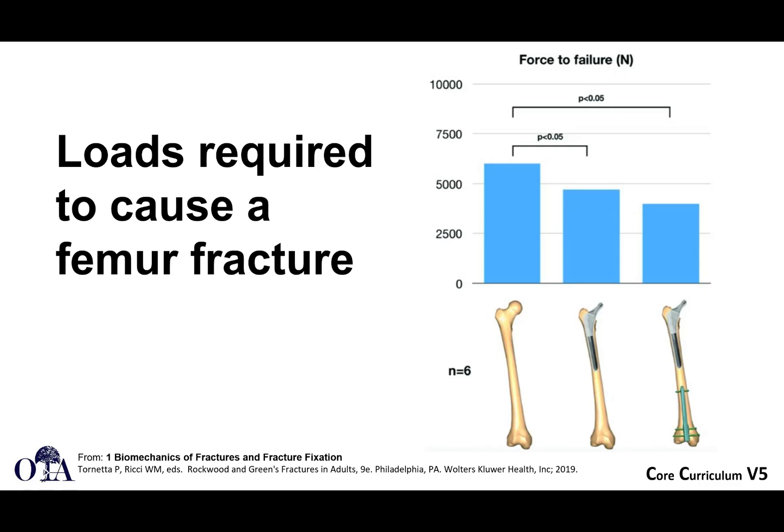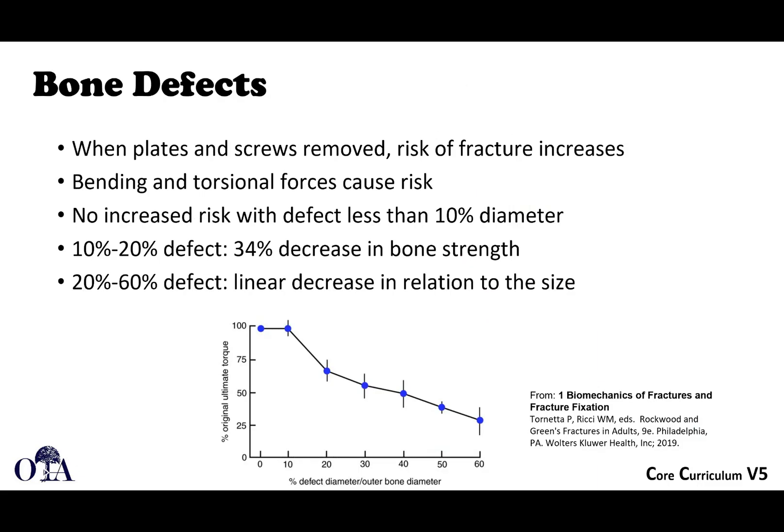This diagram shows the loads required to cause a femur fracture. Going from the intact femur, to a total hip alone, to a total hip above a short retrograde nail, the force required to cause a fracture is much lower than in the intact femur. When you remove plates and screws, you're going to have bone defects, and the risk of fracture increases.